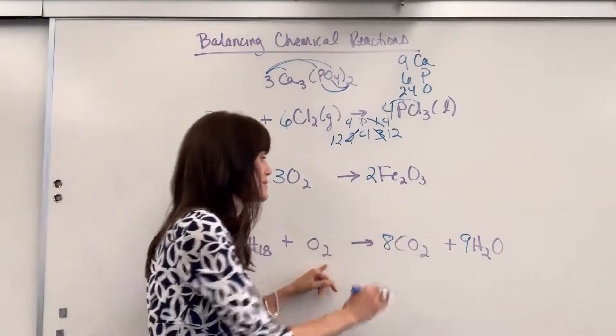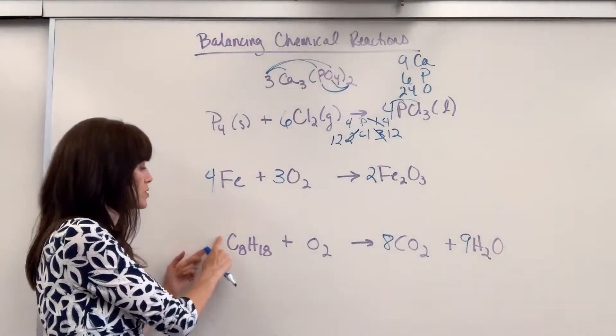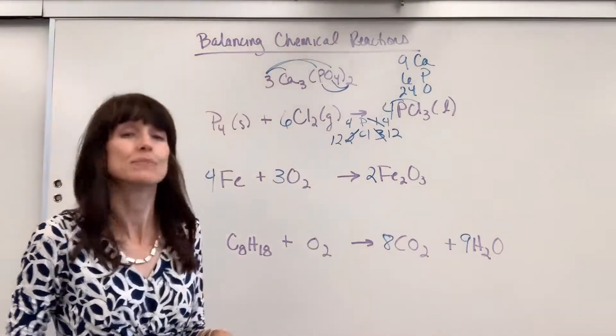Okay, you have one of two choices. When you run into this, what you can do is put a two. You can double everything. Put a two in front of the carbon and then go back and fix everything. But here's the trick.